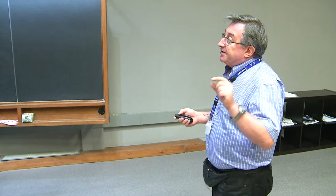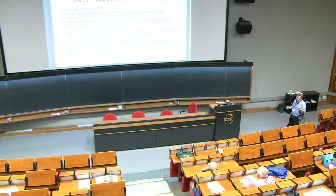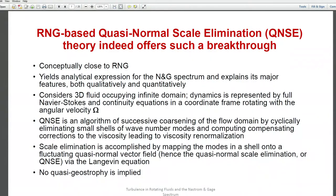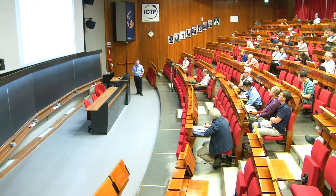It's a successive coarsening of the flow domain by cyclically eliminating a small shell of wave numbers starting at the highest wave numbers around the Kolmogorov wave number. The small shell can be eliminated, and then the compensating effect of the scales on viscosity — in this case only viscosity — is computed. The equations are rewritten with new viscosity, preserving their original form, and then the next shell of wave numbers can be eliminated. This can go all the way to the integral micro scale, or it can be stopped somewhere in the middle to develop a sub-grid scale model.